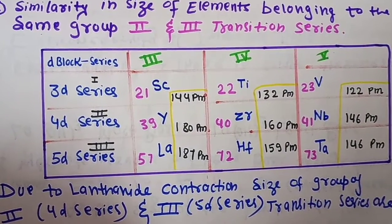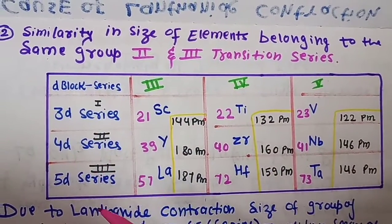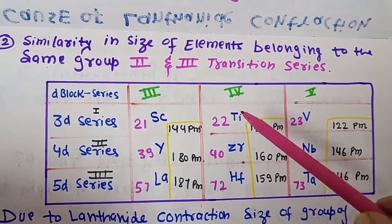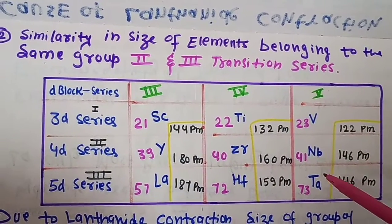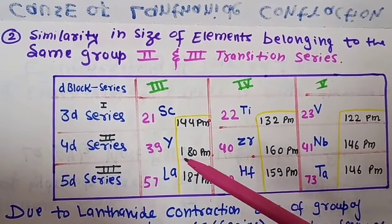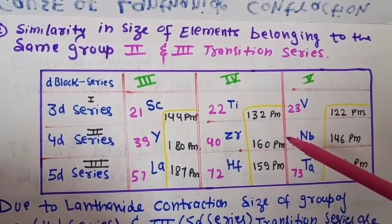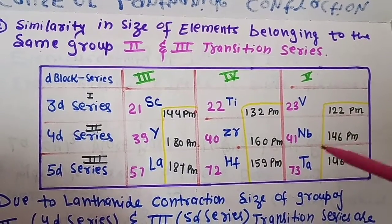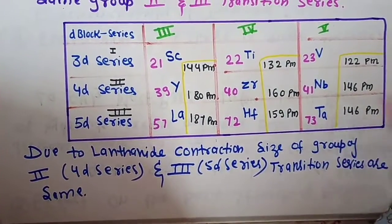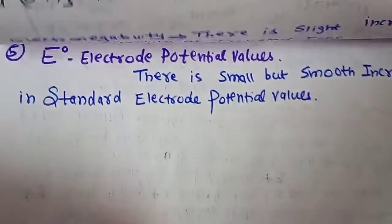The second consequence is the similarity in the size of elements belonging to the same group in the second and third transition series. Because of lanthanide contraction, the second and third transition series elements have nearly the same atomic and ionic radii. For example: scandium, ytterbium, and lanthanum; titanium, zirconium, and hafnium; vanadium, niobium, and tantalum. Their sizes are very close — for ytterbium it is 180 pm and for lanthanum 187 pm — not much difference.